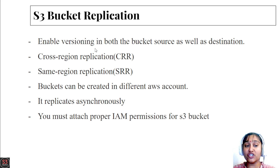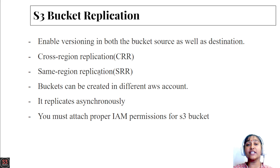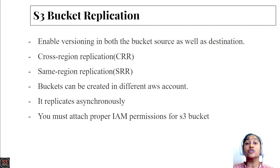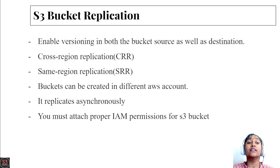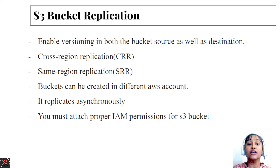We have two types of replication. First is cross-region replication and second is same-region replication. In cross-region replication, the buckets are created in different regions — for example, one bucket in the US East region and another in the Canada region, and we can duplicate objects between them.